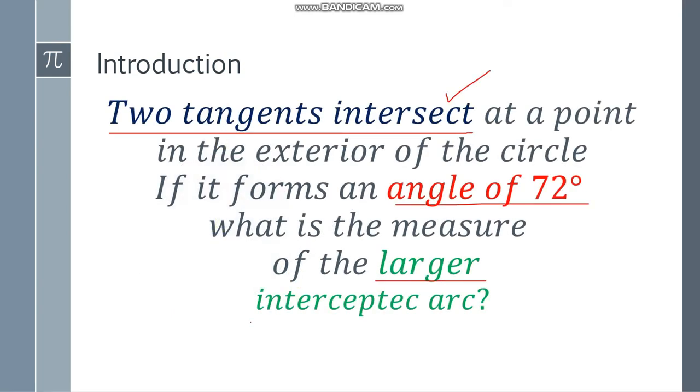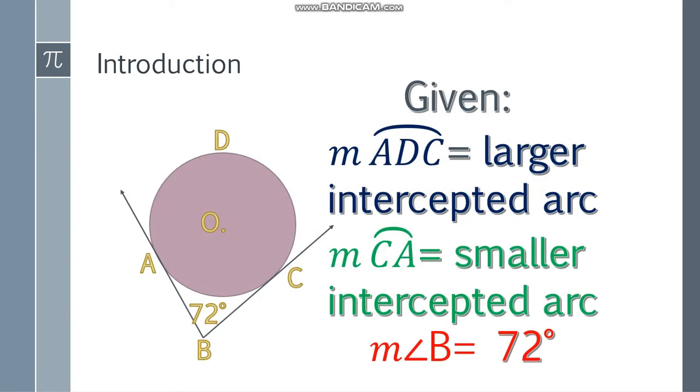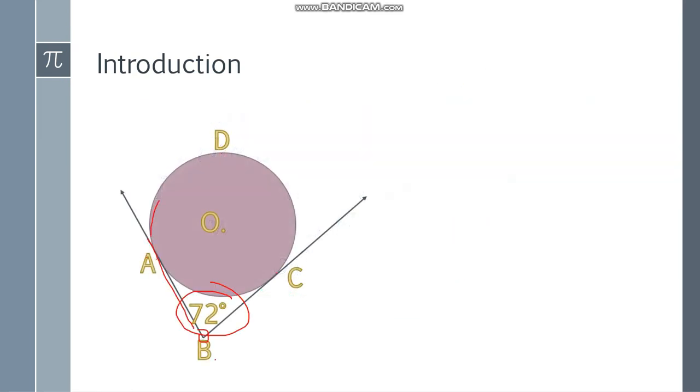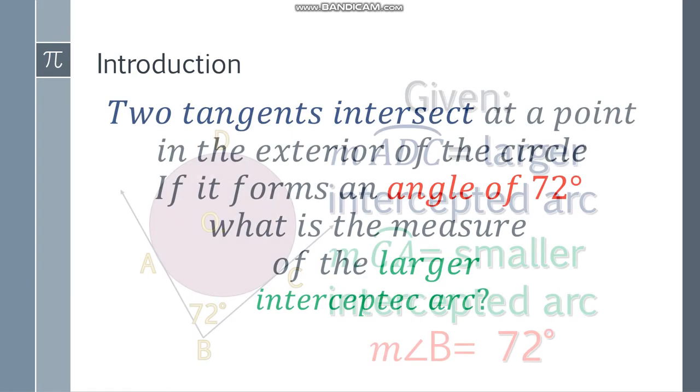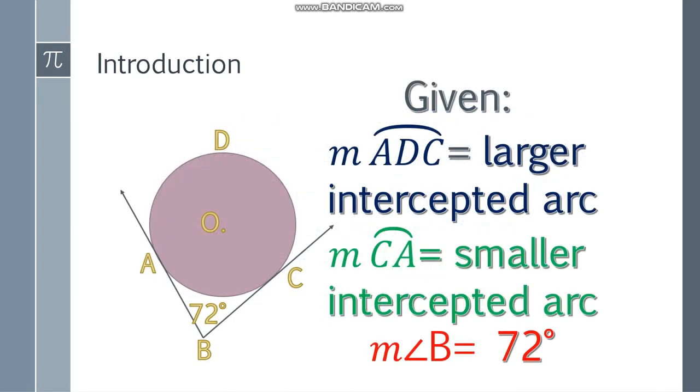And we are asked to find the larger intercepted arc. So we don't know the larger intercepted arc. So the first thing you will do is just list all the given. We only have the value of the exterior angle which is 72 degrees, the smaller intercepted arc, and for the measure of ADC, we just know that that is the larger intercepted arc. But we are here to solve it.